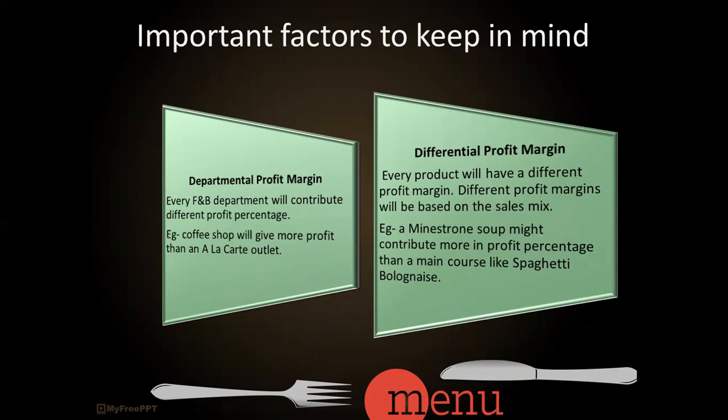Important factors to keep in mind are departmental profit margin and differential profit margin. Every food and beverage department will contribute a different profit percentage — for example, a coffee shop will give more profit compared to an à la carte specialty outlet. Differential profit margin means every product will have a different profit margin based on the sales mix. For example, a minestrone soup might contribute more in profit percentage than a main course like spaghetti bolognese.